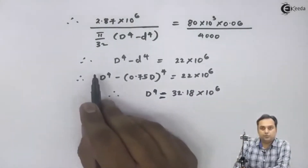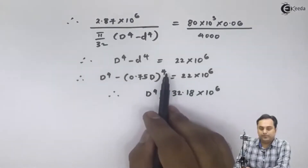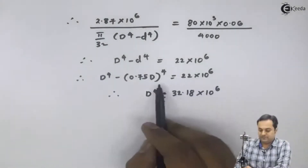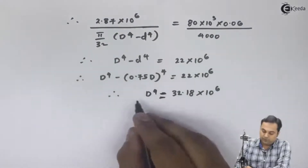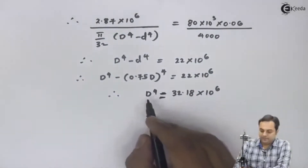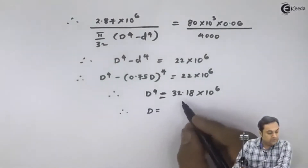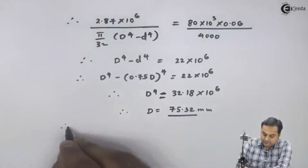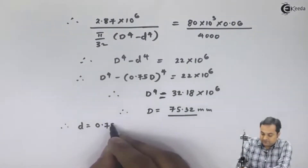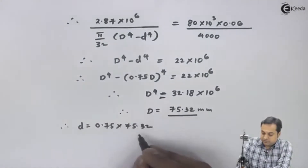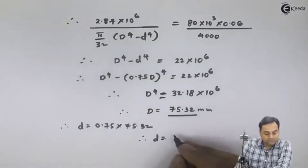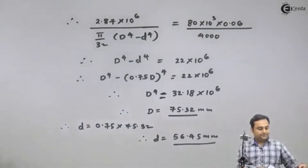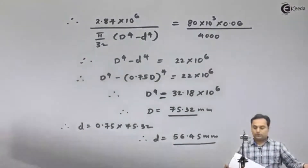The coefficient here is 1 minus 0.75 raised to the power 4. Dividing 22 into 10 raised to 6 by this coefficient gives D raised to 4. Taking the square root twice to get D, capital D comes out to be 75.32 mm. Therefore small d is 0.75 times capital D, giving small d equal to 56.45 mm.